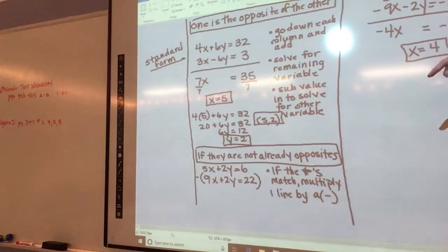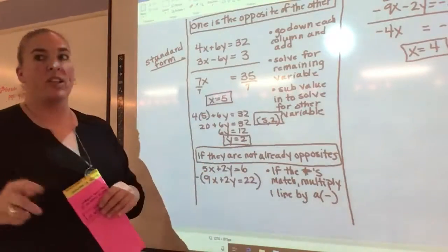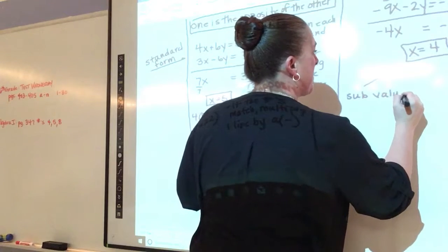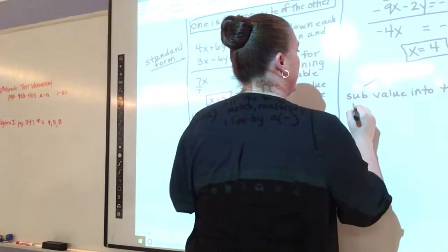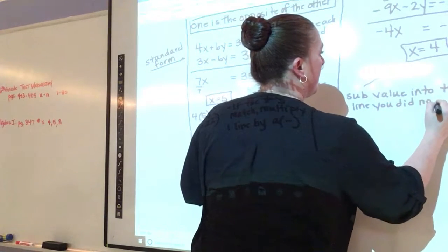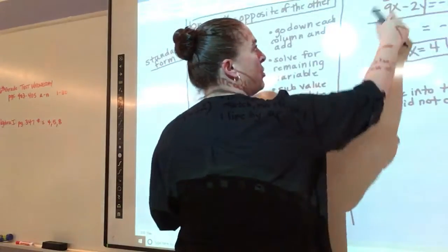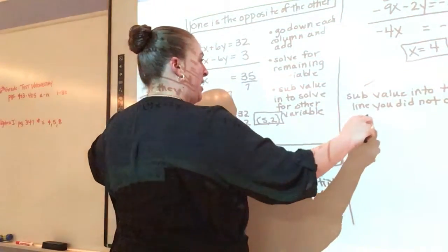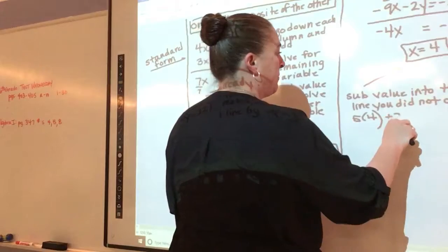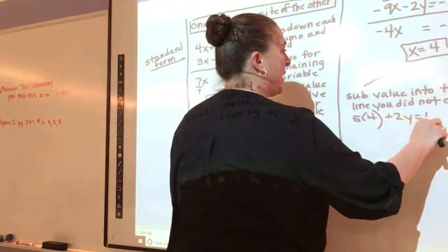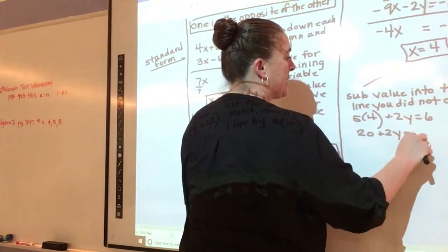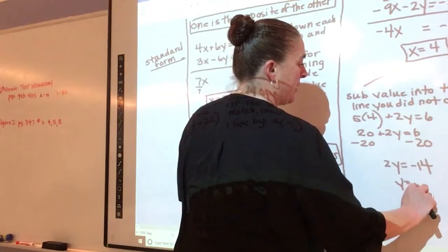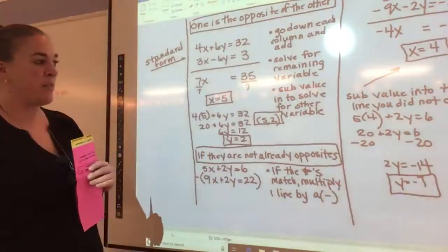Now once I have this, what am I going to do? Plug it in the top. There you go. I'm going to take it back to one of the lines. You got to take it back to the one that you did not change. So I'm going to say substitute value into the line you did not change. So it has to be one of the original lines. So you can't go back to like these two, like this one that I messed up by doing a negative. I got to take it back to something I haven't touched. I have not touched this guy. So I'm going to do 5 times 4 plus 2y equals 6. So 20 plus 2y equals 6. Subtract 20 on both sides, what is that? 2y equals negative 14. So y is negative 7. So that point is 4 comma negative 7.